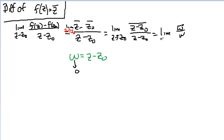So limit as w goes to zero of w conjugate over w. This we can figure out pretty easily.